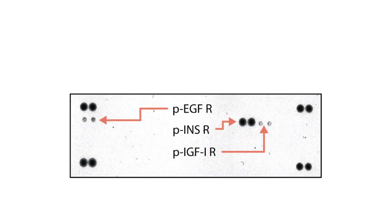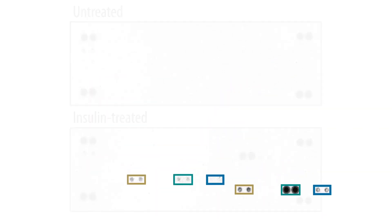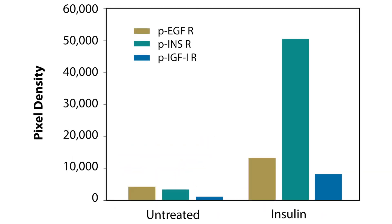The assay requires no specialized equipment and the chemiluminescence signal can be measured using film or a camera system in the same manner as an immunoblot. Finally, the image data may be analyzed using image analysis software to show changes in kinase phosphorylation levels.